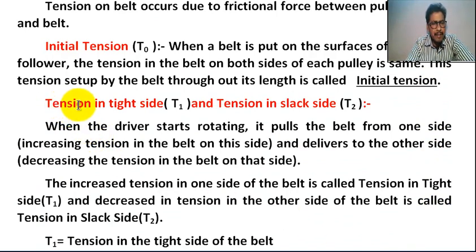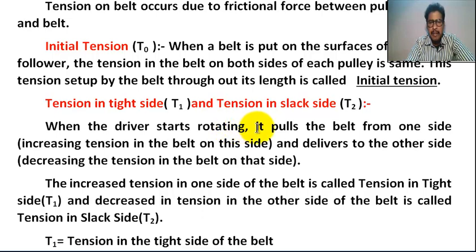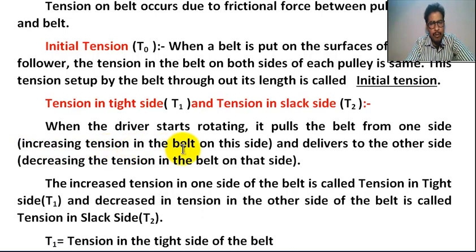Tension in tight side T1 and tension in slack side T2: When the driver starts rotating, it pulls the belt from one side, increasing the tension in the belt on that side, and decreasing the tension in the belt on the other side.